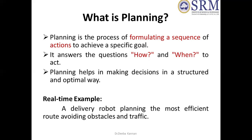For example, there is a delivery robot. It will deliver a package to a destination — this is the task. The initial state is where the robot starts. If we want to deliver the package correctly, that will be the goal. We consider the route map, the traffic, the obstacles, and the shortest path so the robot reaches the destination. This is the planning.